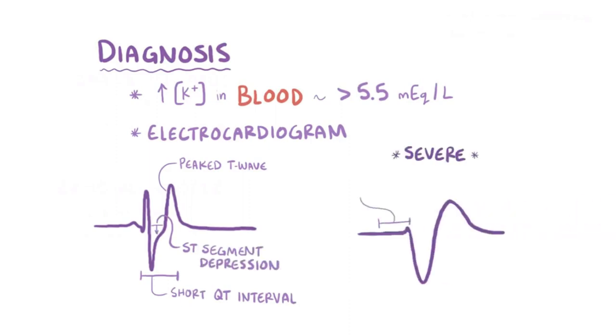In severe cases, it can also cause a prolonged PR interval, a diminished or absent P wave, and a widened QRS complex.